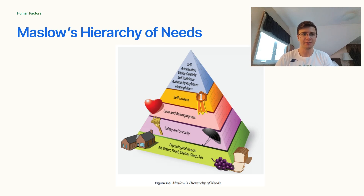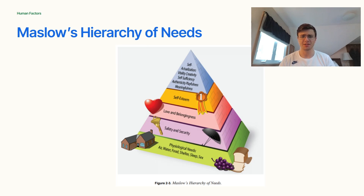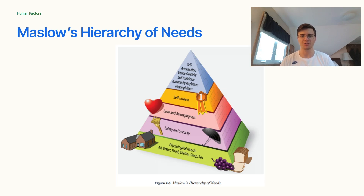Let's start first with Maslow's Hierarchy of Needs. It describes the basic human needs — there are five layers. The first layer is physiological needs: air, water, food, shelter, sleep, and sex. The next layer is safety and security — the feeling that nothing bad is going to happen to you in your day-to-day life. Next is love and belongingness. As instructors, we are responsible for instilling in you, the student pilot, a sense of belongingness. If you don't feel like you belong, you won't succeed as a pilot.